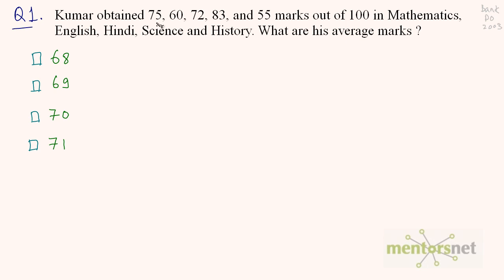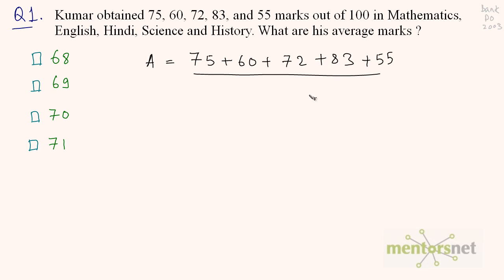You have the numbers — take the sum, divide it by count and you get the average. So average is equal to the sum of these marks: 75 plus 60 plus 72 plus 83 plus 55, divided by the number of subjects — 1, 2, 3, 4 and 5 — so divide it by 5.